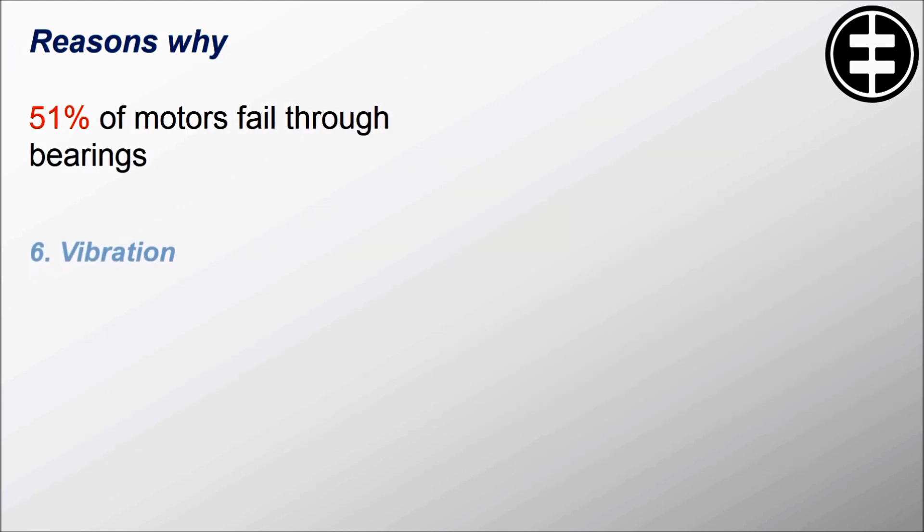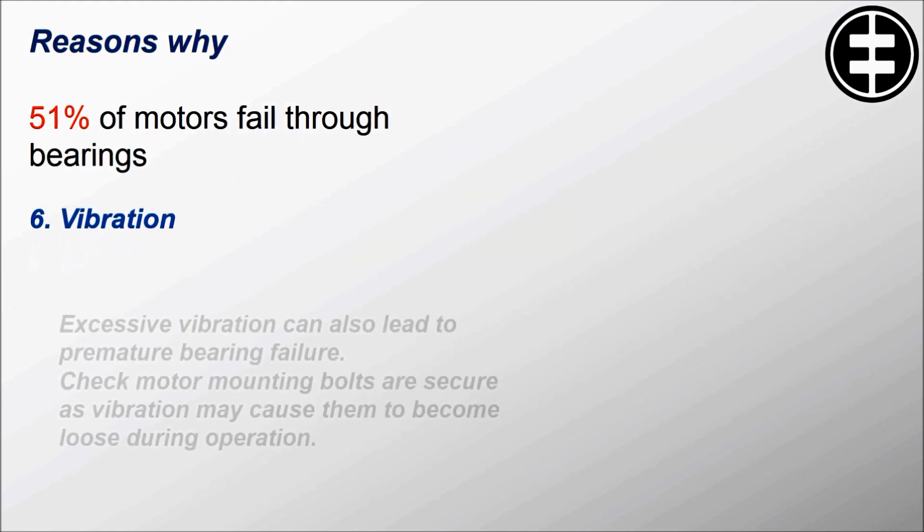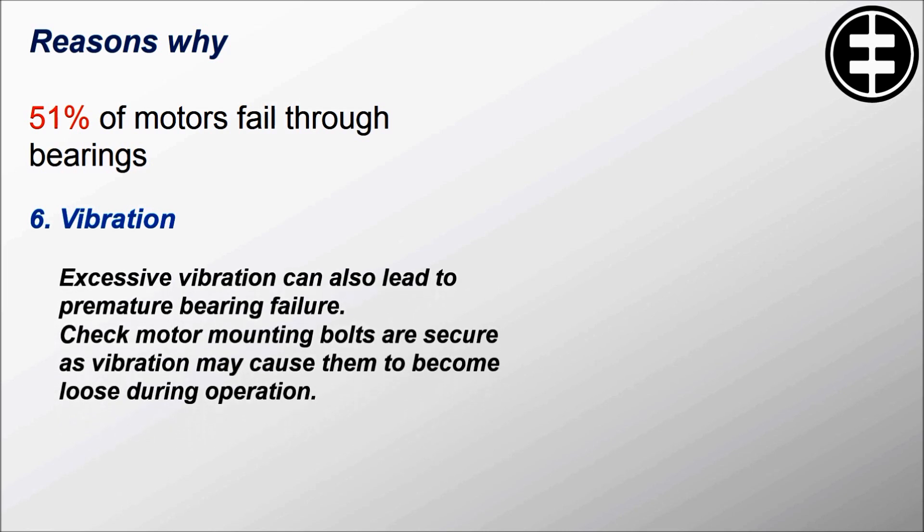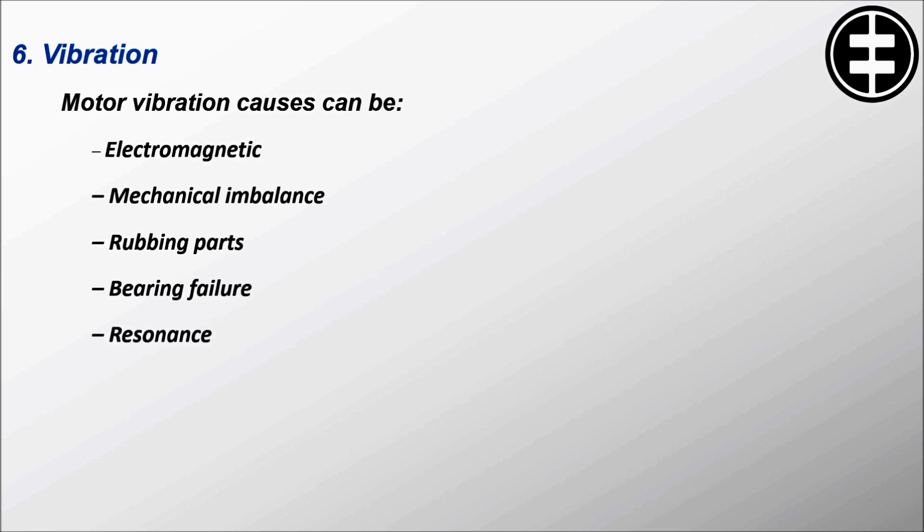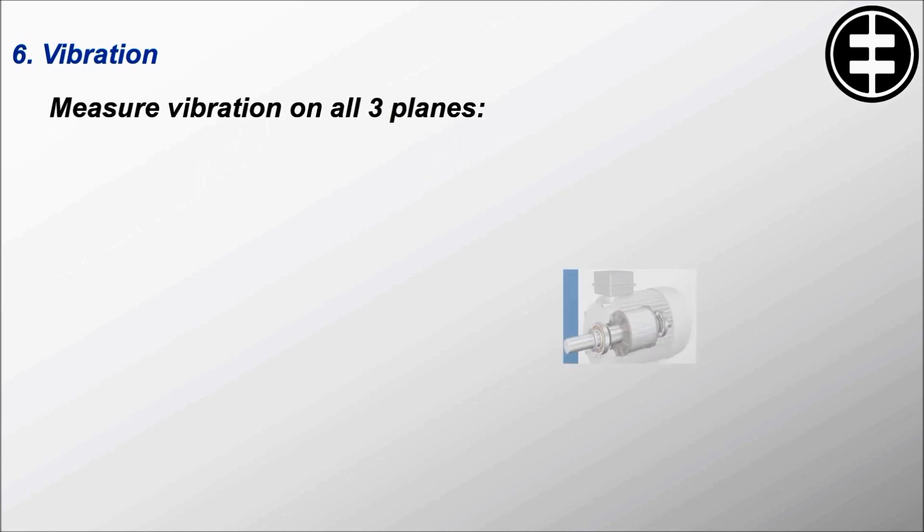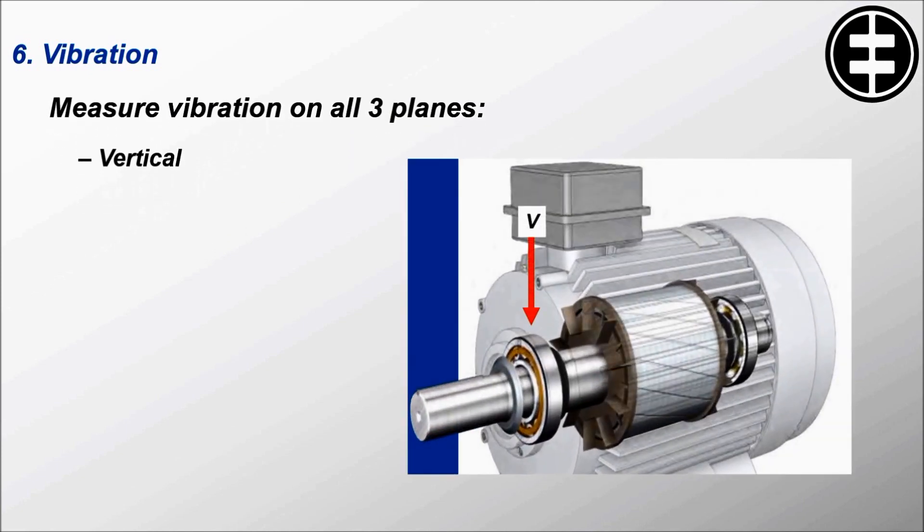Reason number six is vibration. Excessive vibration can also lead to premature bearing failure. Check motor mounting bolts are secure, as vibration may cause them to become loose during operation. Motor vibration causes can be electromagnetic, mechanical imbalance, rubbing parts, or bearing failure. Resonance. Measure vibration on all three planes: vertical, horizontal, and axial.